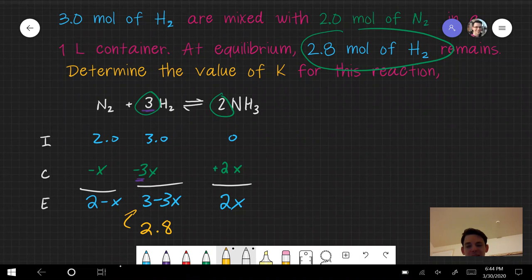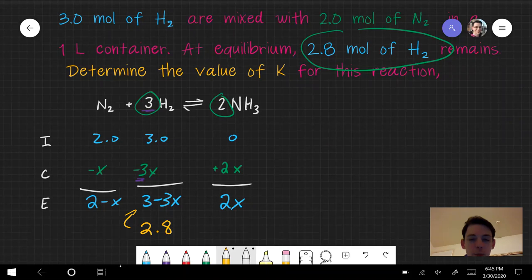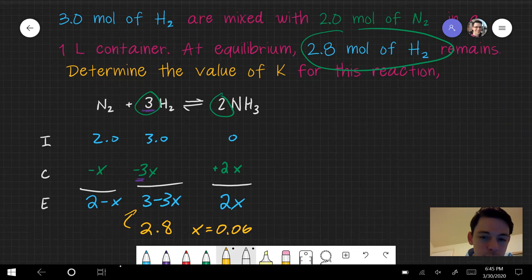You should find that x equals about 0.07 rounded, just to one sig fig, but 0.067 given that we do have 2 sig figs in this problem.